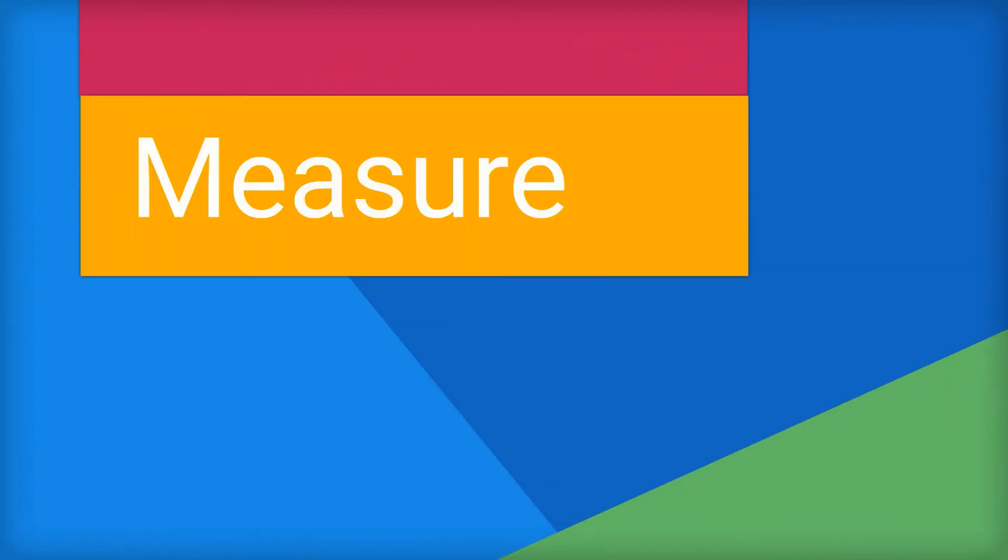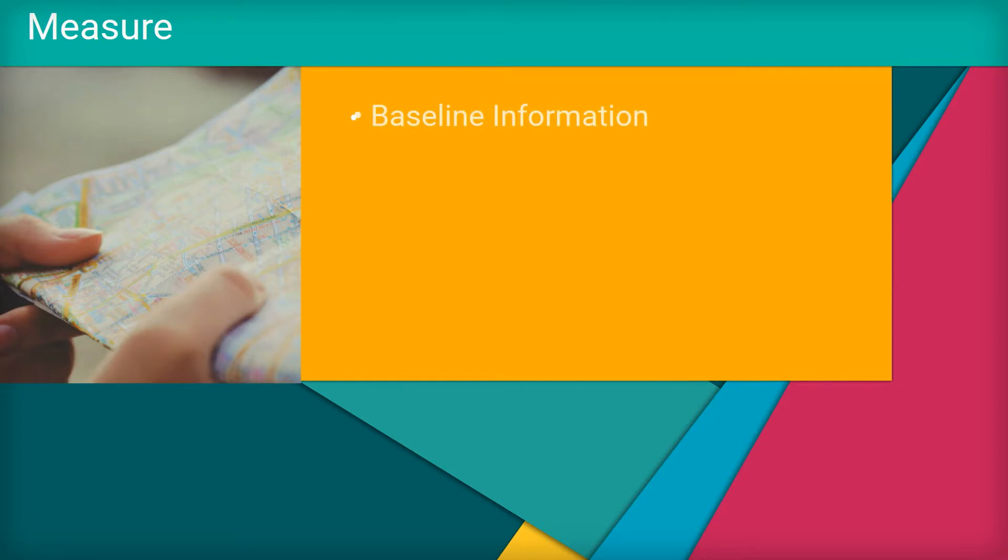The second DMAIC step is Measure. The Measure phase focuses on selecting and collecting data to understand capability and variation of the current system. This step establishes baseline information that is essential to analyze, implement, and test design modifications or improvement theories.